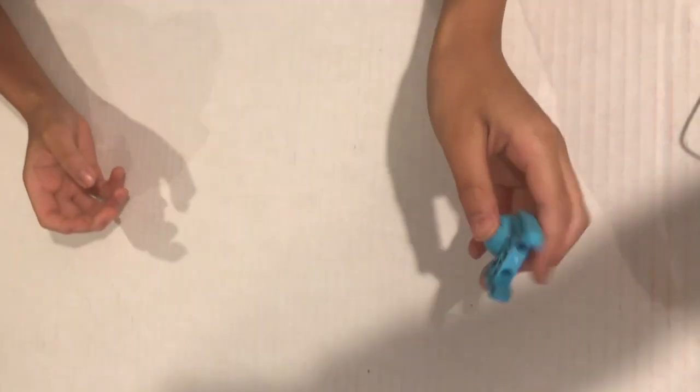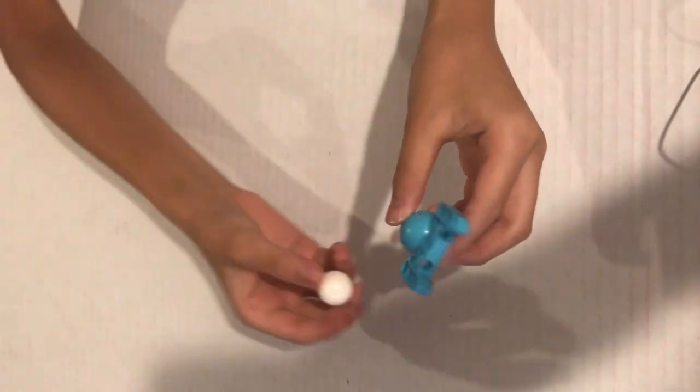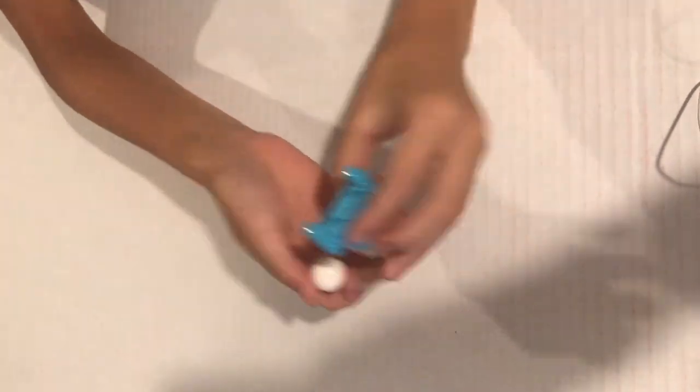Here is a caster and this is the ball that goes with it. This is what they look like when they're together.